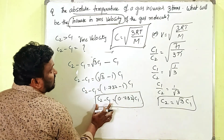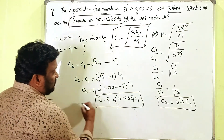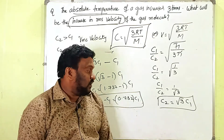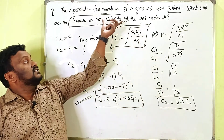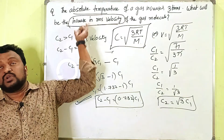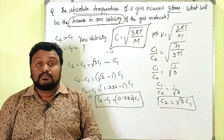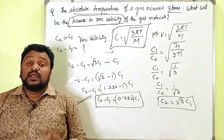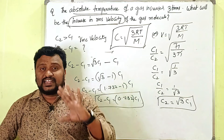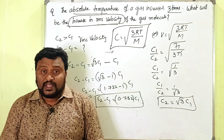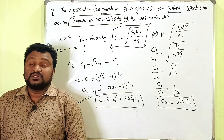This is the most important two-mark question — you must write the answer up to this point. Many students find only c2 but forget that the question asks for the change in RMS velocity, which is c2 − c1. Dear students, if you understood this, please like, share, and comment. I am uploading IPE, NEET, and previous exam questions on this channel, so please subscribe. Thank you for watching.